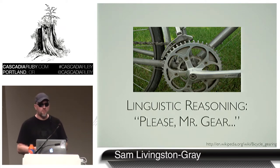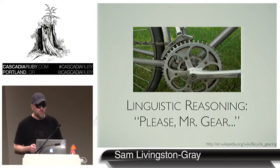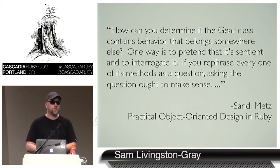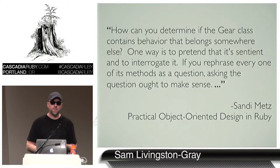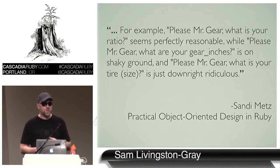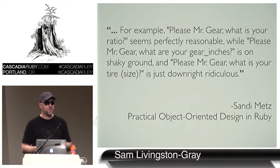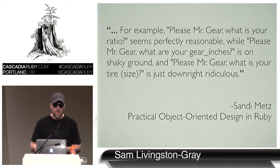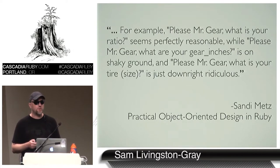The other linguistic hack I got from Sandy Metz. In her book Practical Object-Oriented Design in Ruby, she describes a technique to figure out what object a method should belong to. She says: how can you determine if the Gear class contains behavior that belongs somewhere else? One way is to pretend that it's sentient and interrogate it. If you rephrase every one of its methods as a question, asking the question ought to make sense. For example: "Please, Mr. Gear, what is your ratio?" — seems perfectly reasonable. "Please, Mr. Gear, what are your gear inches?" — is on shaky ground. And "Please, Mr. Gear, what is your tire size?" — is just downright ridiculous. This is a great way to evaluate objects in light of the single responsibility principle.